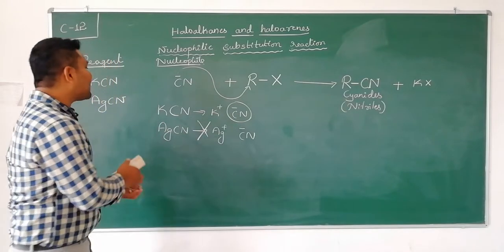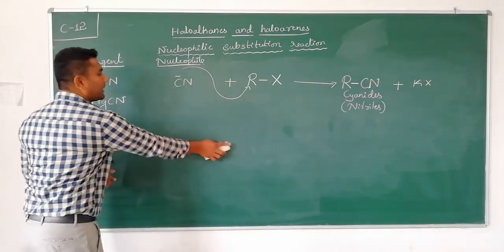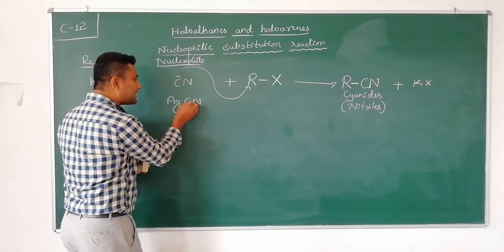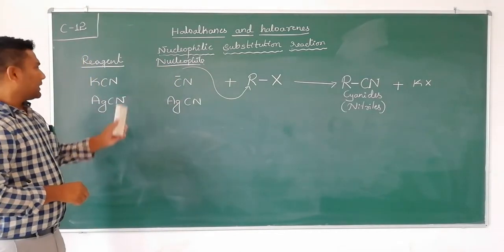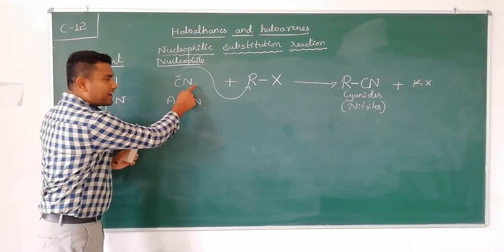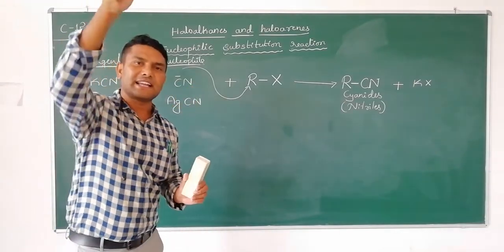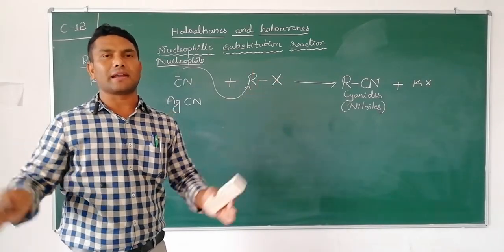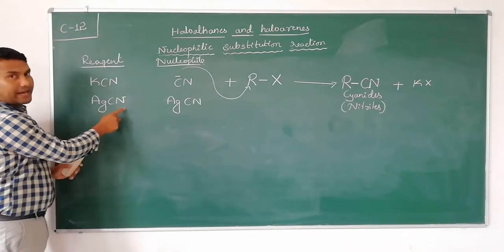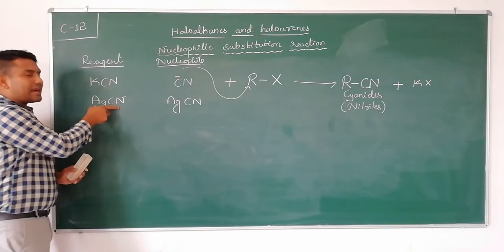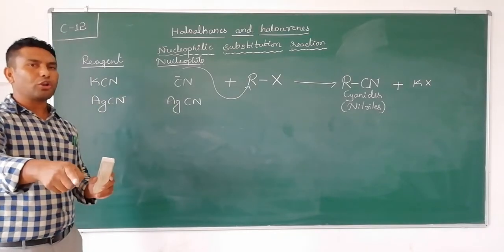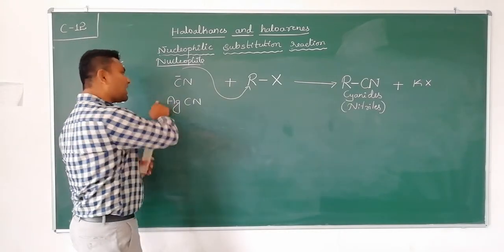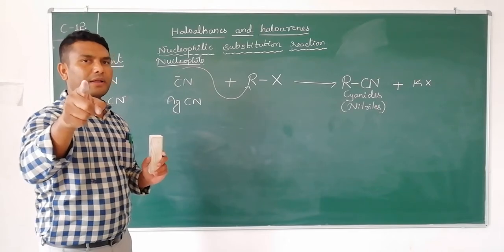Therefore, silver cyanide will not undergo dissociation. In this case, silver cyanide itself is the nucleophile. Please remember: in the case of KCN, the cyanide ion is the nucleophile because KCN is an ionic compound, but in the case of silver cyanide, it is predominantly a covalent bond, so there is no dissociation and silver cyanide itself is the nucleophile.